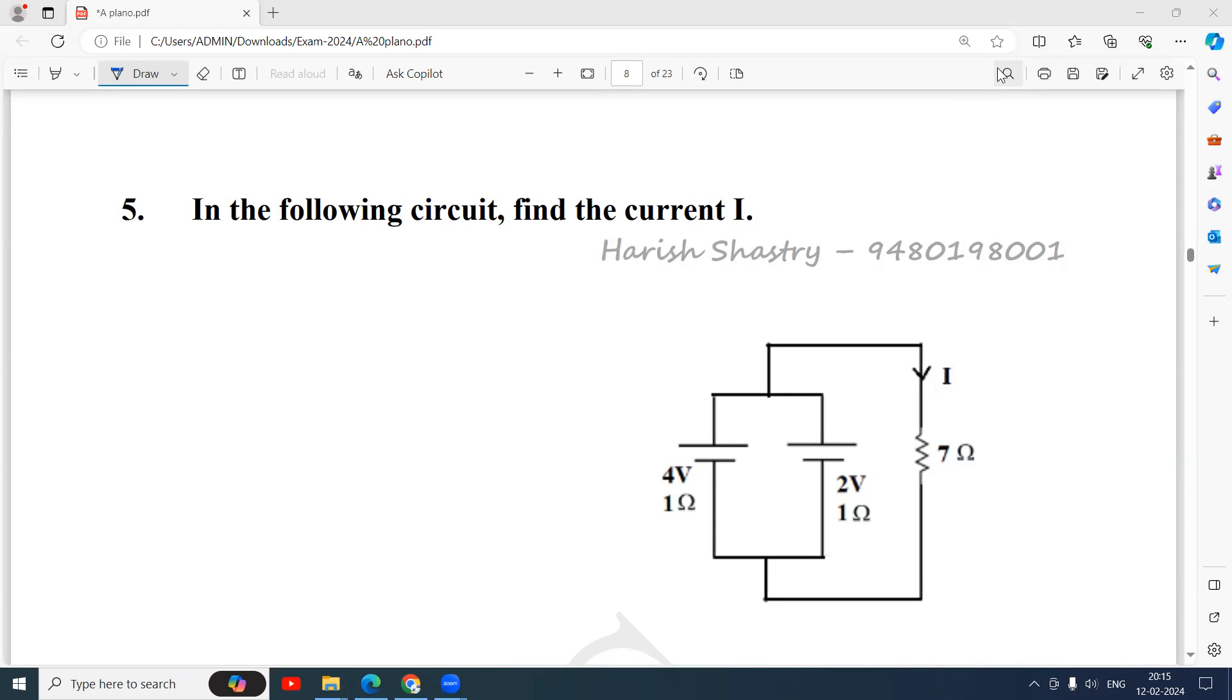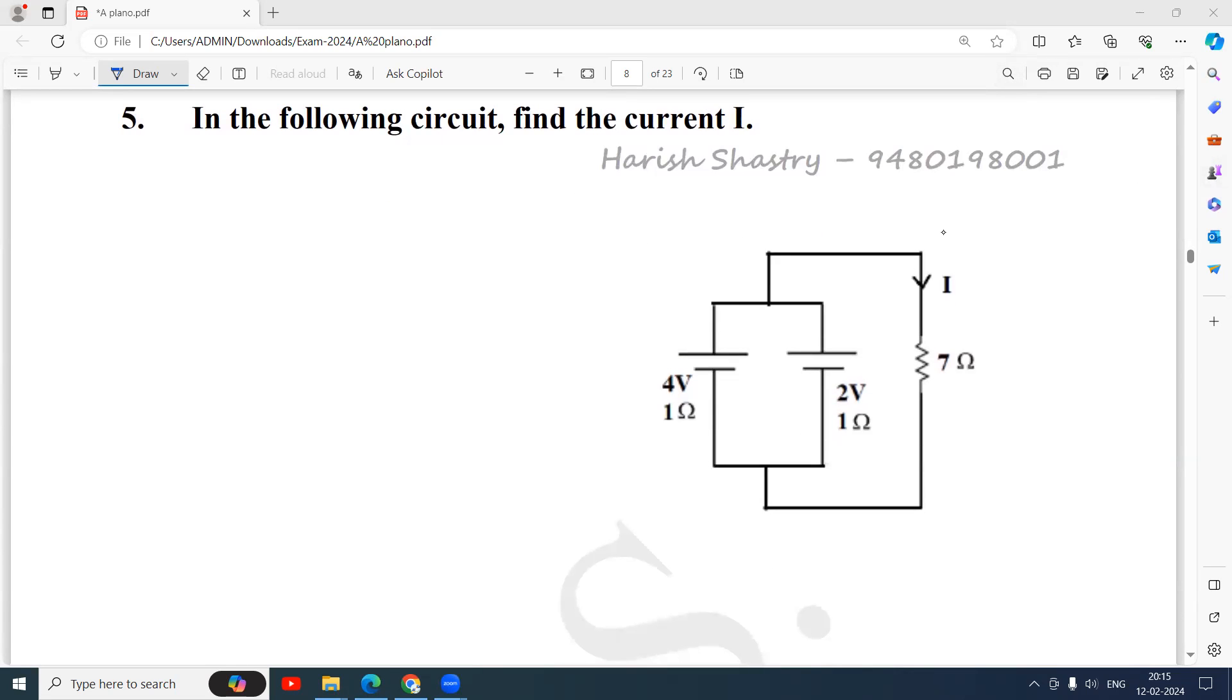Namaste everyone, let us solve this problem which is based on Kirchhoff's law. In the following circuit, find the current I. I is located here, you are asked to find out this current I. So the easiest method is replace these two batteries by a single battery and then find out the current.